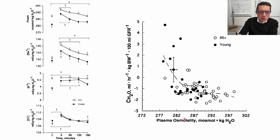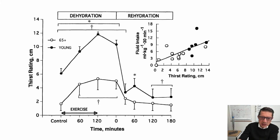At lower osmolality, we see higher levels of free water clearance — when osmolality is low, you expect high urinary output. Those data come primarily from young adults. At high plasma osmolality, the data represent primarily the older adults — the 65 plus group.